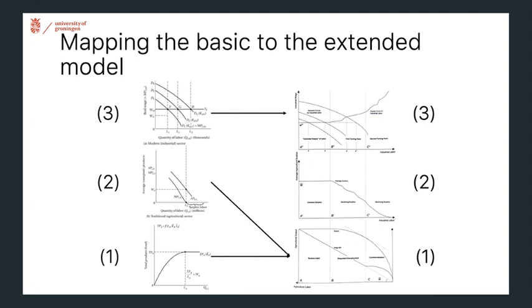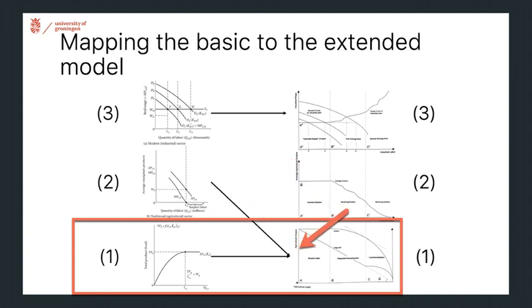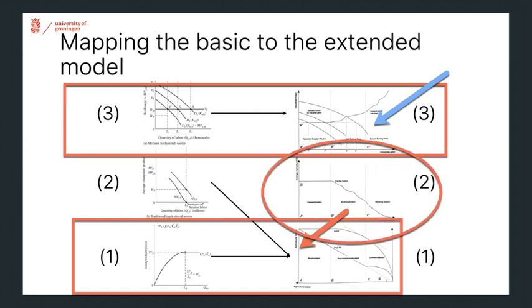To do that we move to an extended exposition using somewhat different figures than before, but covering very similar ground. There's the agricultural sector with the production side at the bottom, along with the agricultural labor markets mapped into that first figure. At the top are two figures on the industrial sector covering the labor markets — demand curve shifting outwards, a labor supply curve extending further than in the basic model — and most novel, the food markets for agricultural surplus.